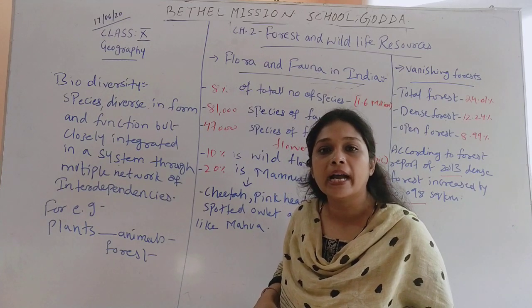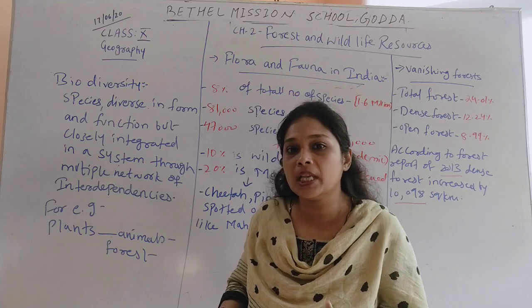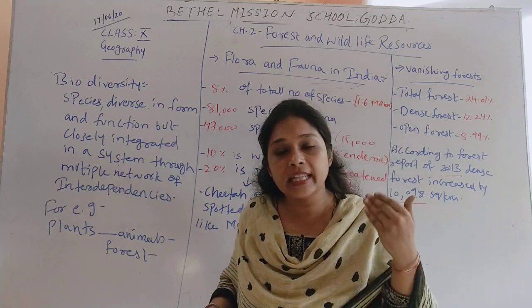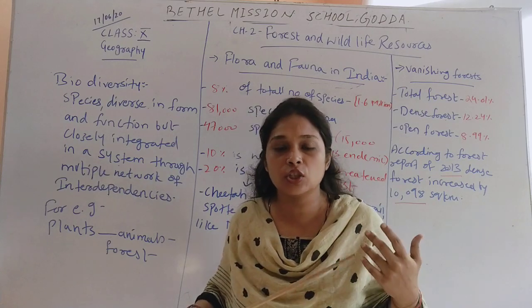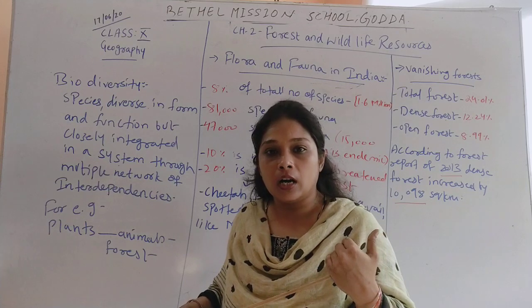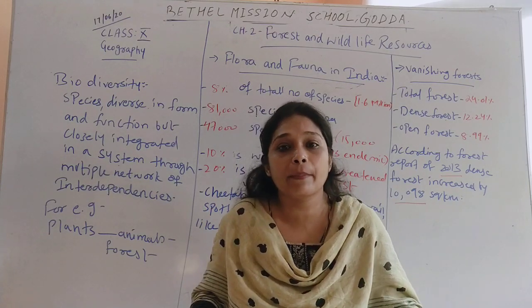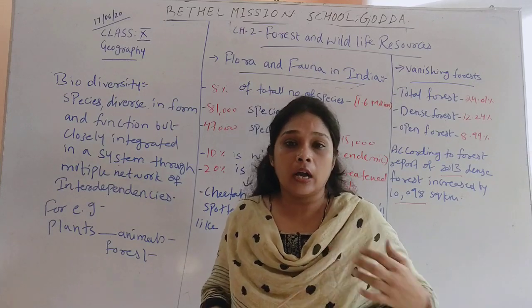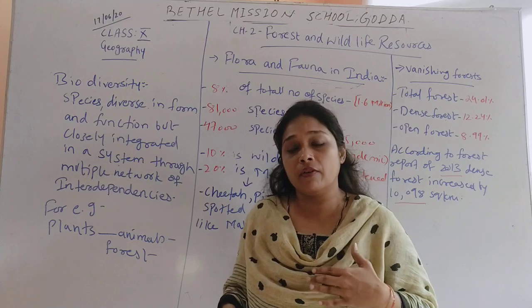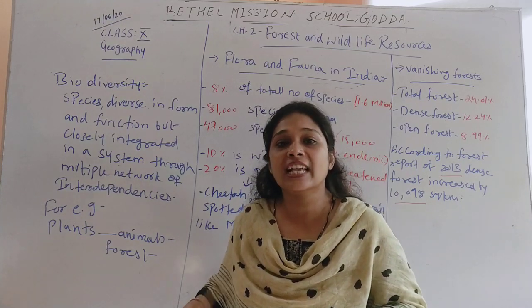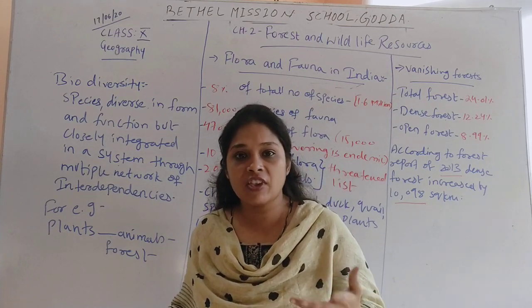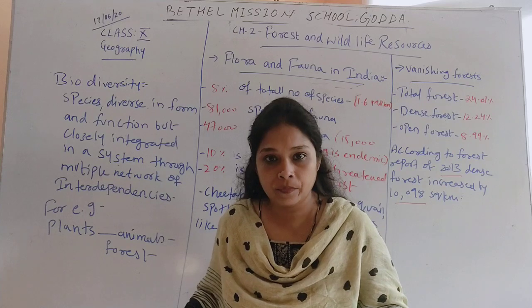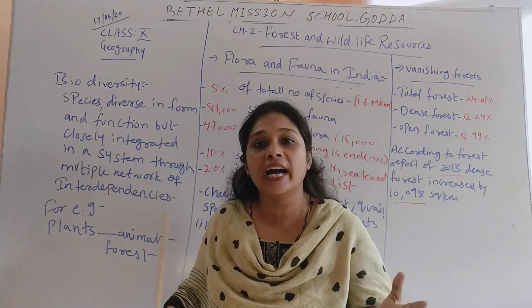What do we mean by biodiversity? Diversity means differences. In the whole world, we have different kinds of human beings — physically, intellectually, on the basis of intelligence level, physical appearances, capacity and capabilities. Similarly, animals and plants also have different features and varieties. We have marine plants, marine animals, earth plants, earth animals — these varieties of species make up biodiversity in the world.